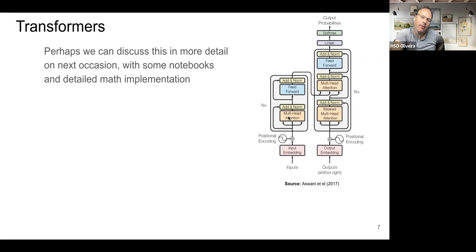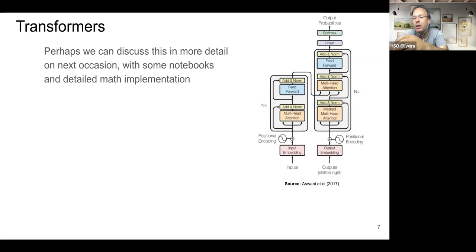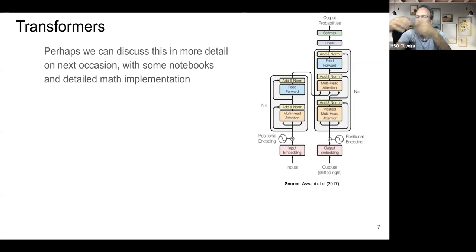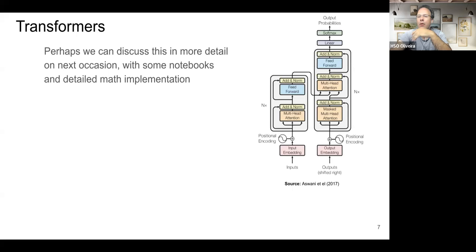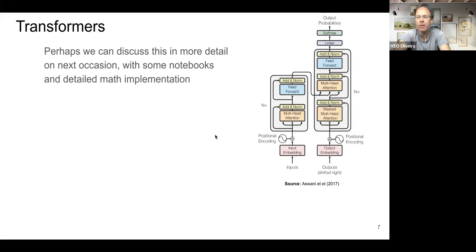Multi-head attention is important: using just one head is very limited because the model tends to focus on its own word. With multi-head attention we give the model the ability to gather contributions from multiple other words — many-to-one or one-to-many relations. Positional encodings are also important — they measure the distance among words and recover relative positions that would be lost when decomposing a sentence into word embeddings. Residuals and softmax complete the architecture.